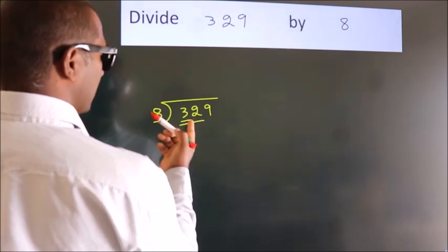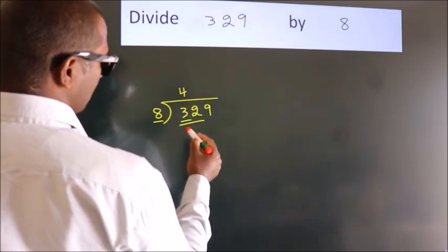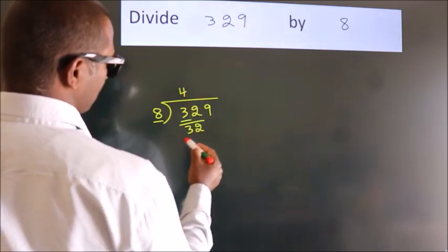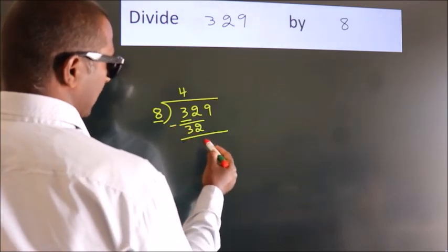When do we get 32 in the 8 table? 8 fours, 32. Now we should subtract. We get 0.